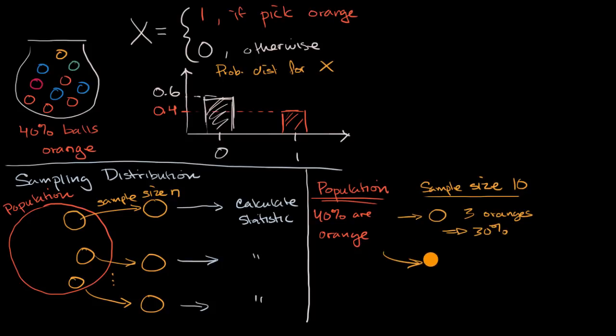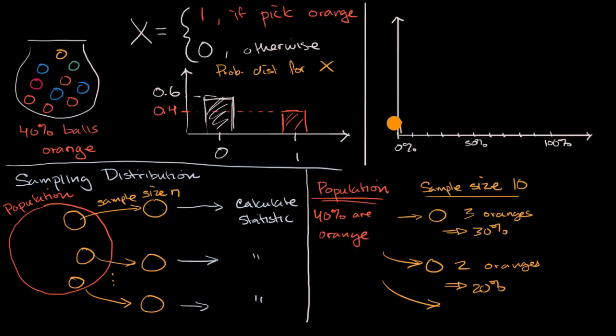And then if I do it again, I get two oranges, and that is 20%. And I just keep doing this. And eventually, I can plot a distribution of these sample proportions. You would end up with some type of a discrete distribution.